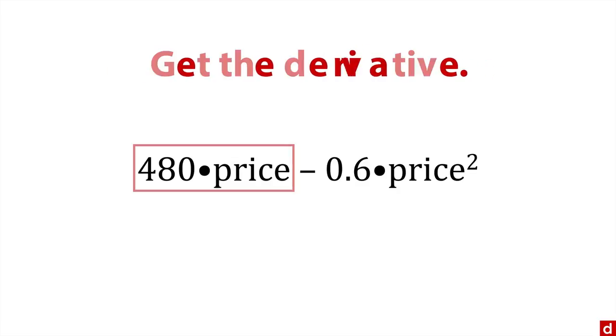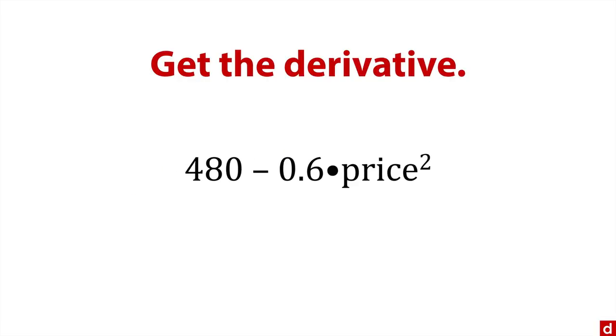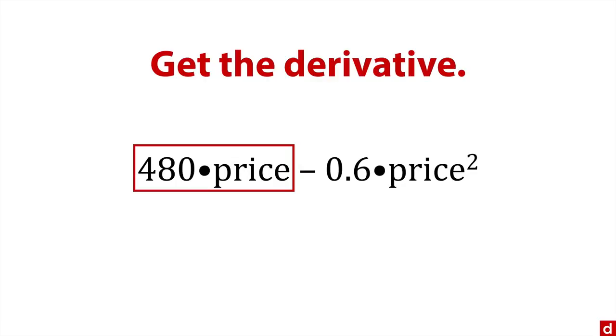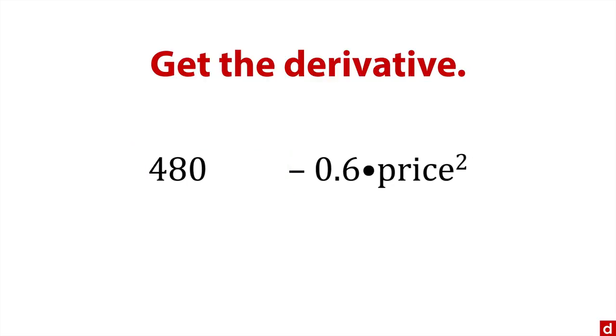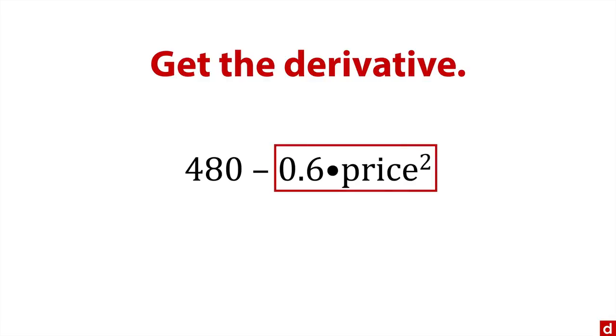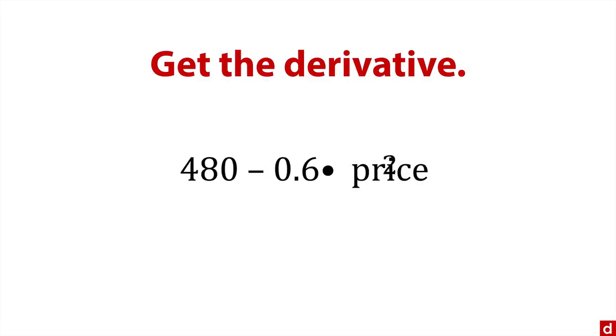Now we're going to get the derivative, that's the calculus we talked about. The derivative of 480 times price is simply 480. And minus 0.6 times the square of the price, similar to the curve we did, gives us 0.6 times 2 equals 1.2 times the price. This is the derivative of the original equation. We can solve that for zero now.